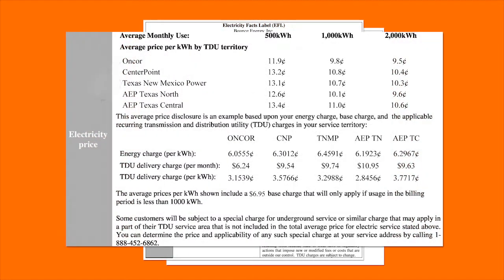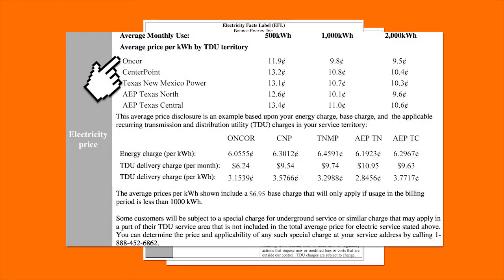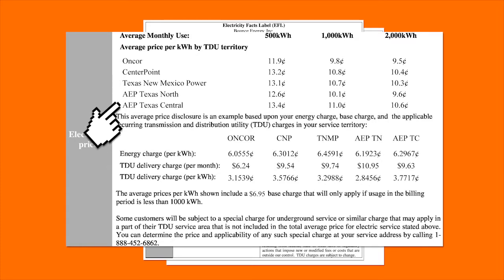The electricity price field shows the average price per kilowatt hour according to the TDU territory. Below you will see the energy charge for your TDU territory — this is what Bounce Energy charges you for energy. This cost remains constant for the length of your term if you are on a fixed plan. If you are on a variable or month-to-month plan, your energy charge may fluctuate depending on the market. Every time your energy charge changes, a new EFL takes effect.